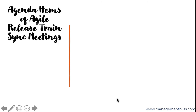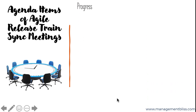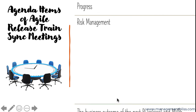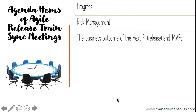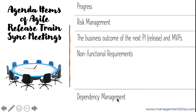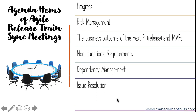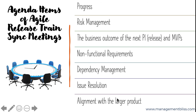The agenda items for Agile Release Train Sync meetings include: progress, risk management, the business outcome of the next PI and MVPs, non-functional requirements, dependency management, issue resolution, and alignment with the larger product.